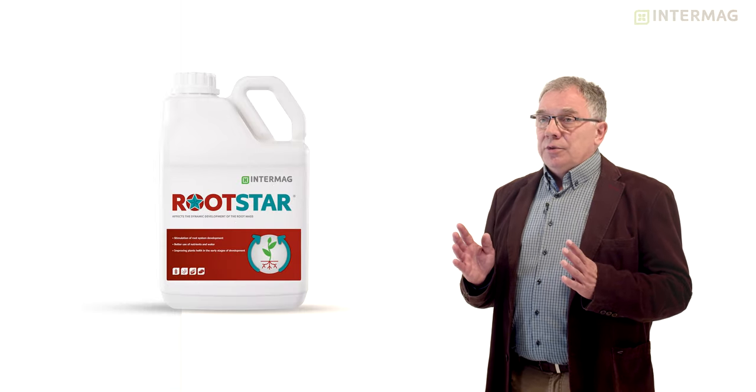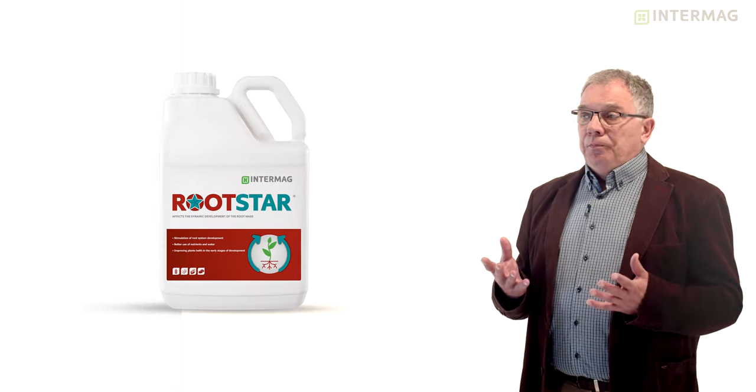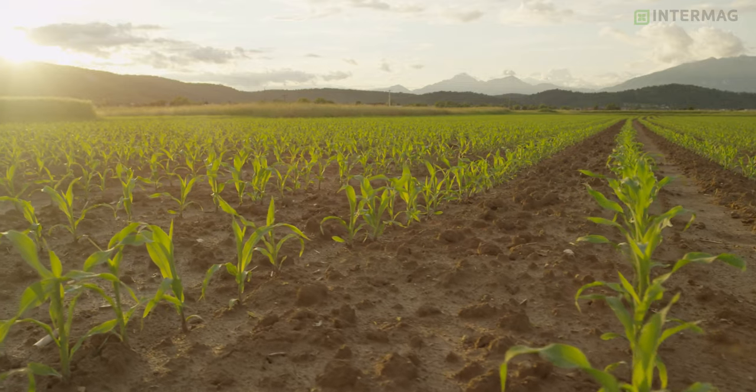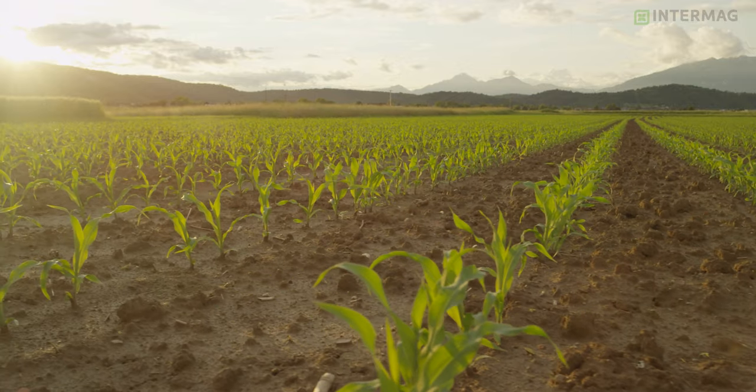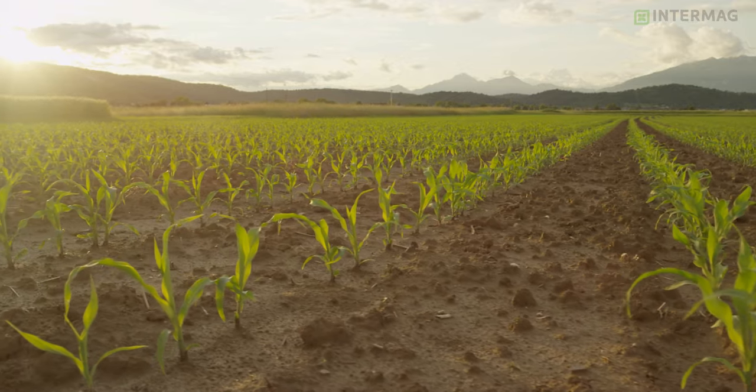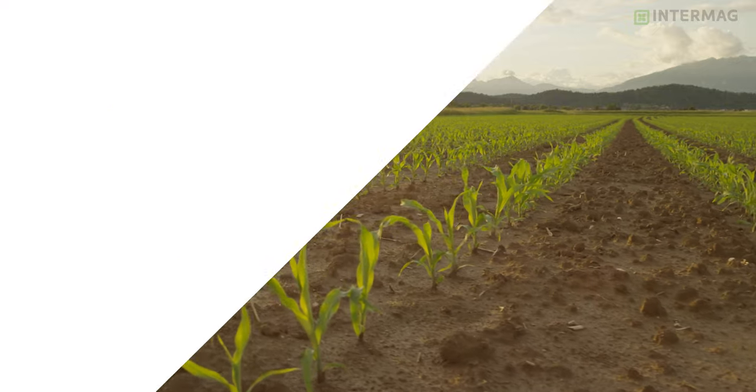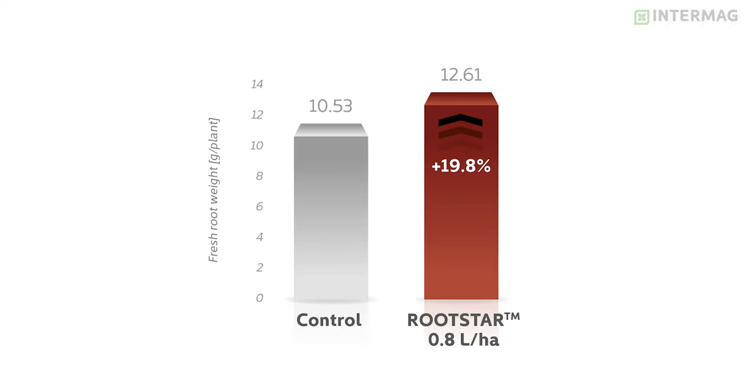Some examples, some numbers. When we apply RootStar to plants we can expect significant increase of root system growth, means length and weight. As you can see at this graph we manage to increase fresh root weight of maize by almost 20 percent which gives us much better conditions for root growth and plant growth just at the beginning of vegetation season.